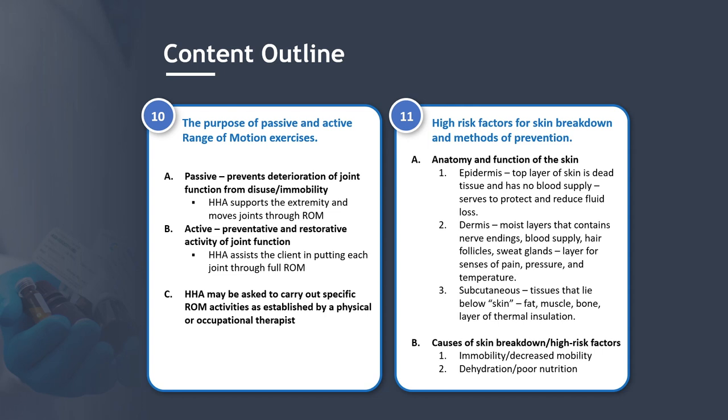Section 11: High Risk Factors for Skin Breakdown and Methods of Prevention. Anatomy and function of the skin: the epidermis is the top layer, dead tissue with no blood supply — it serves to protect and reduce fluid loss. The dermis contains nerve endings, blood supply, hair follicles, and sweat glands — it is the layer for senses of pain, pressure, and temperature. Subcutaneous tissue lies below the skin, including fat, muscle, bone, and a layer of thermal insulation.